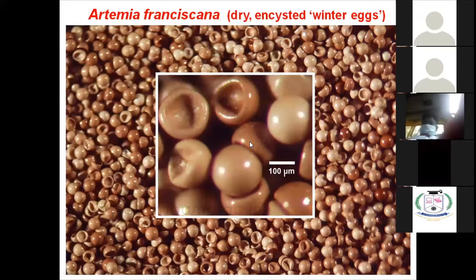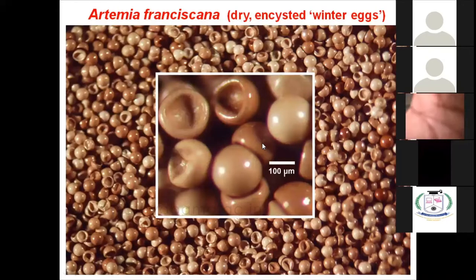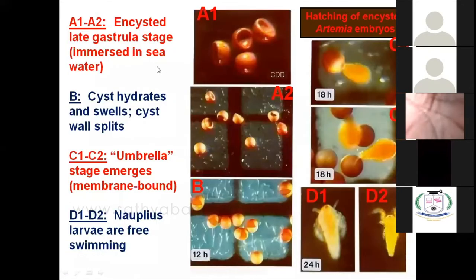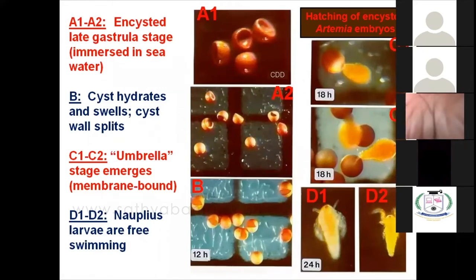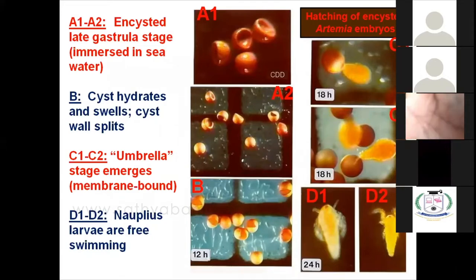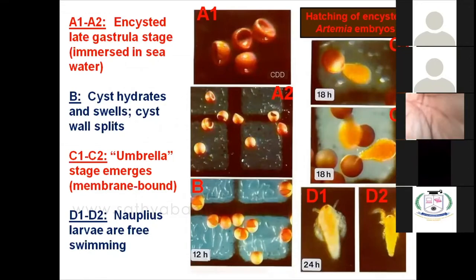On the sixth day it becomes the 11th instar and eye spot formation is developed. On the seventh day it is the 15th instar, and on the 14th day it becomes an adult. Depending upon the environmental condition, sexual or asexual reproduction occurs. This is the picture of a cyst with a scale of micrometers showing what it looks like. When we hydrate the cyst in water, it develops into a nauplii.